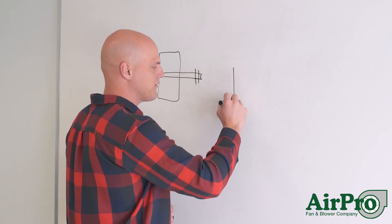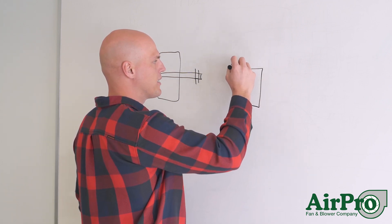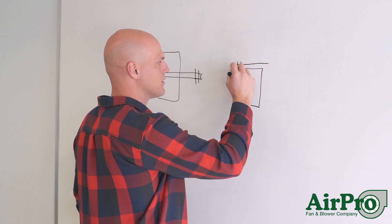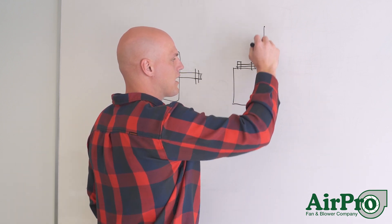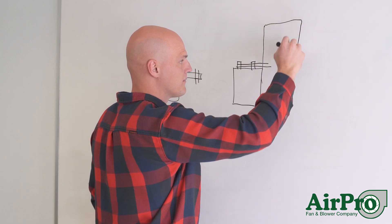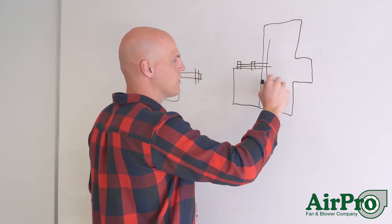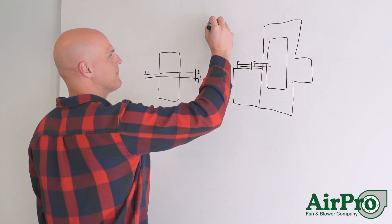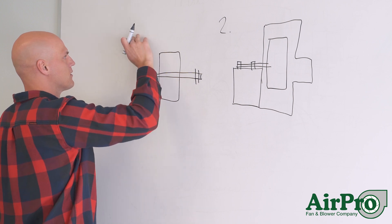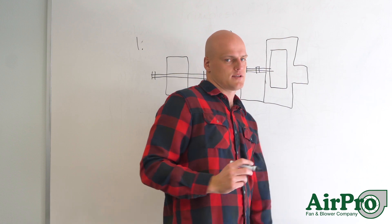Step two is the complete fan. So let's say in this case, we've got a pedestal, we have bearings, we've got a housing, and we've got the wheel that we balanced by itself in step one. And now we're looking at step two.